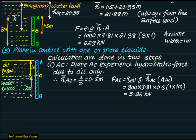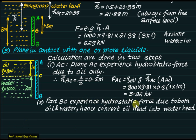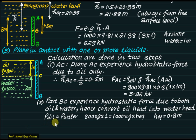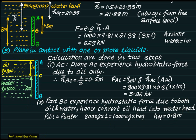For part BC, which experiences hydrostatic force due to both oil and water, we must first convert the oil head into an equivalent water head. Setting pressure of oil equal to pressure of water: 800 × 9.81 × 1 = 1000 × 9.81 × H_equivalent, giving H_equivalent = 0.8 meters. We then remove the oil and replace it with 0.8 meters of imaginary water, so the entire fluid becomes water for calculation of force on BC.